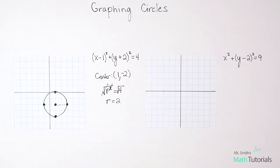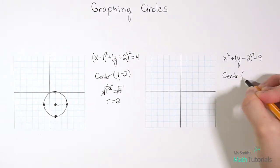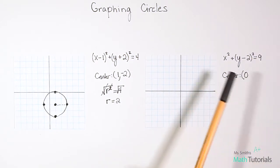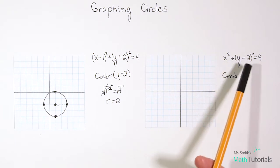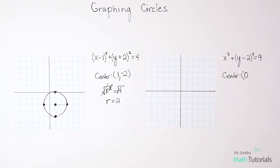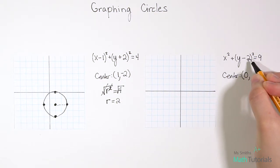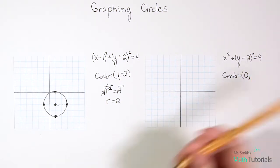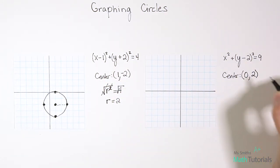So what that tells me is that h value, that first value of the center, the x value, it's zero. When you don't see something and it just goes straight to an x squared or straight to a y squared, that means that value is zero. For our y part, notice that this says negative 2. We go back to that same thinking we did here where if that's a negative 2, then really it's a positive 2 in the center.